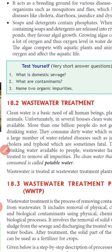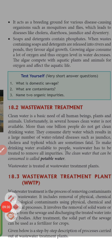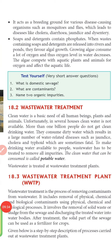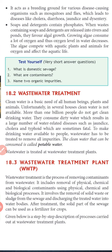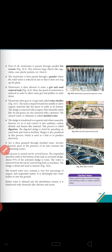Next we have wastewater treatment. The clean water that can be consumed is called potable water. So potable water ko banane ke liye yeh sara wastewater treatment hota hai — wastewater treatment plant. It is a process of removing contaminants from wastewater. It includes the removal of physical, chemical and biological contaminants using physical, chemical and biological processes. After treatment, the solid part of the sewage can be used as fertilizer for crops.